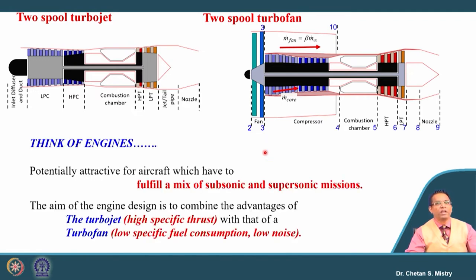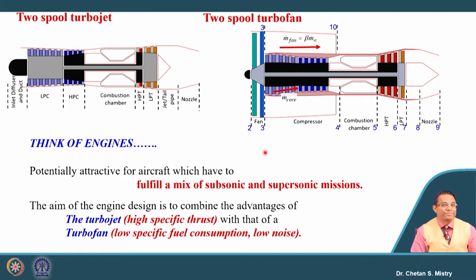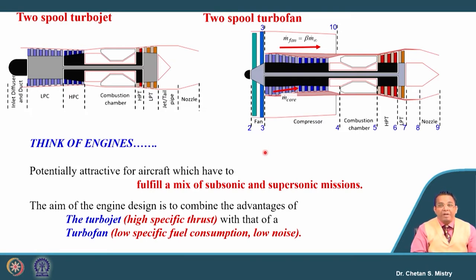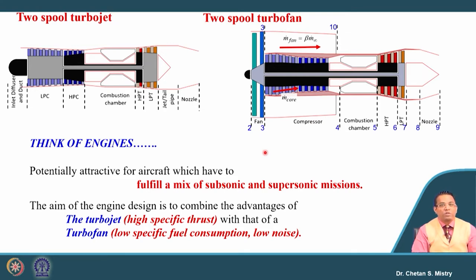Can we think of an engine that has the benefits of both turbojet and turbofan? That would fulfill our requirements for subsonic as well as supersonic operation. For military application, supersonic mission is a major requirement. At the same time, subsonic operation brings the benefit of better specific fuel consumption. So let us target the advantages of both engines: the turbojet gives higher specific thrust, while the turbofan gives lower specific fuel consumption and lower emissions.